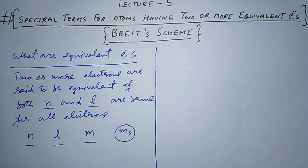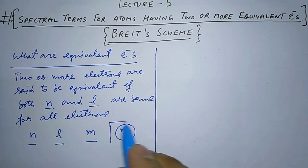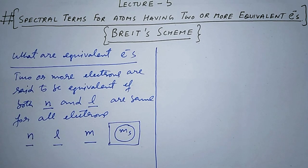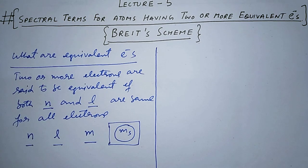If N and L values are the same, and the values of ml are also the same for two electrons, then there must be a difference in the fourth quantum number — the spin quantum number. This is due to Pauli's exclusion principle, which does not allow two or more electrons to be in the same energy state. At least one quantum number must be different, so the spin quantum number ms will be different for two equivalent electrons.